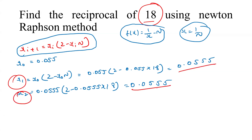In Newton-Raphson method, the number of steps is also decided by the initial approximation. If you take an initial approximation close to the root, the answer is reached in two or three iterations. If you take a wrong initial approximation, the steps may increase. I took x_0 = 0.055, and within two steps the successive approximations are equal.